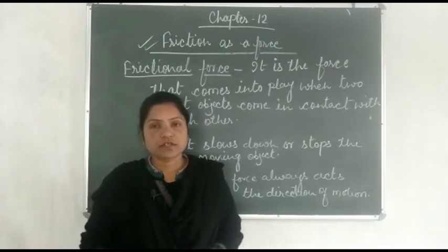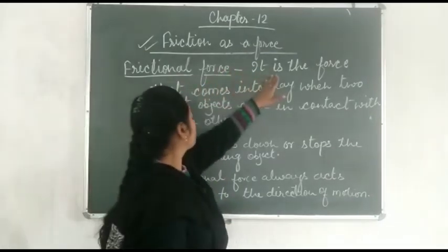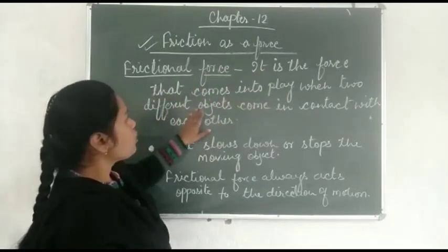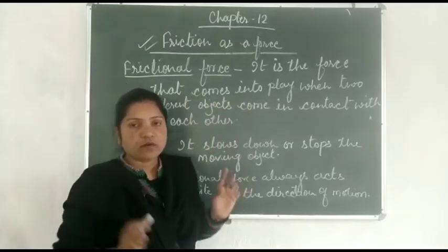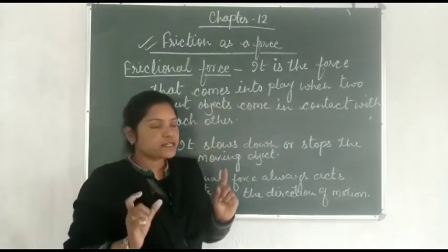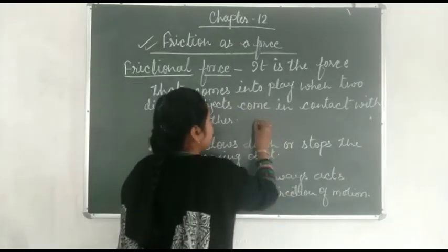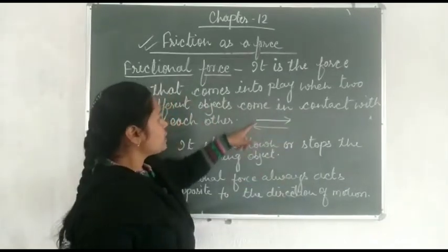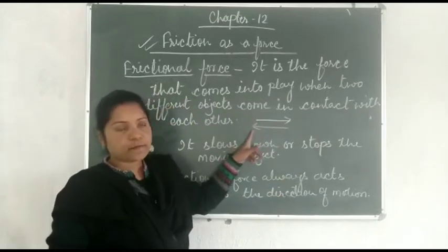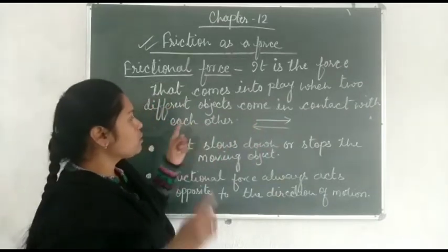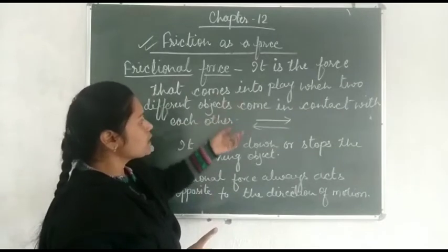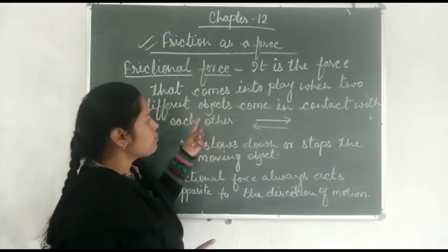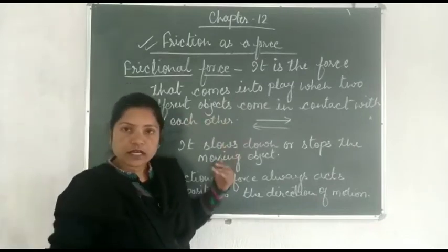What is frictional force? Frictional force is the force that comes into play when two different objects come in contact with each other — physical contact must be there. Then frictional force works. When two objects come in contact with each other, frictional force applies, and it opposes the motion of one object over another object.